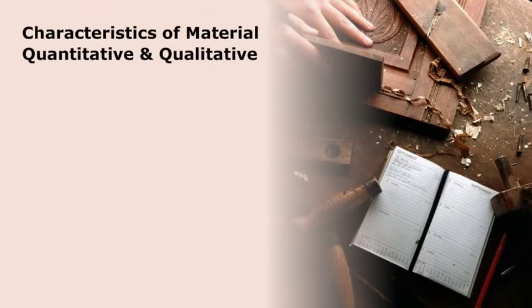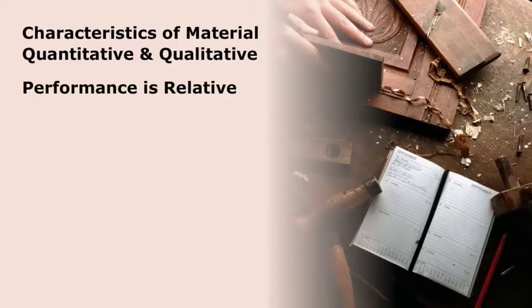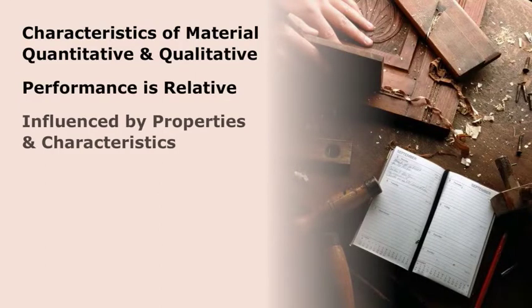Characteristics of material can be quantitative, that is, measurable, and qualitative, in other words, perceived through the senses. A material's performance in furniture is a relative matter. How well materials perform is influenced by many considerations, grounded by technical material properties and descriptive characteristics.